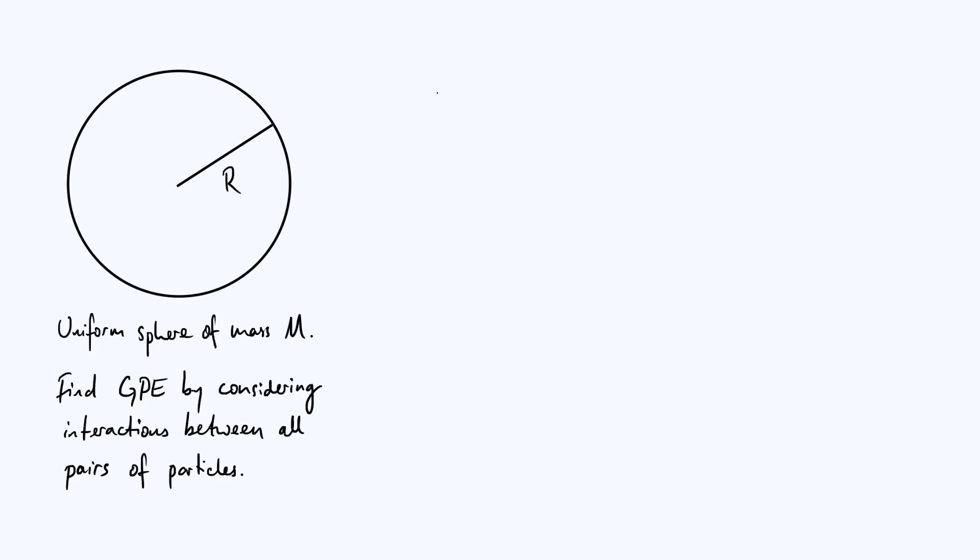Now let's translate that idea into a mathematical statement. Let's say the total potential energy is U. We are going to sum over all pairs of particles in the system, and we just use our standard expression for the interaction energy of two particles: minus G times m1 m2, where those are the masses of the two particles, divided by what I'm going to call r12, which is just the separation between those two particles.